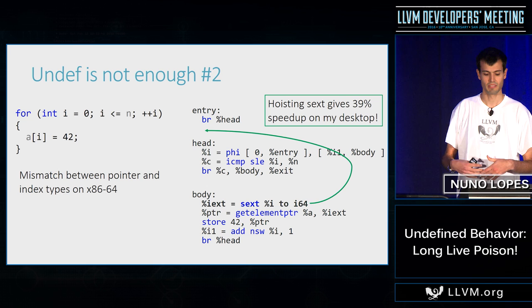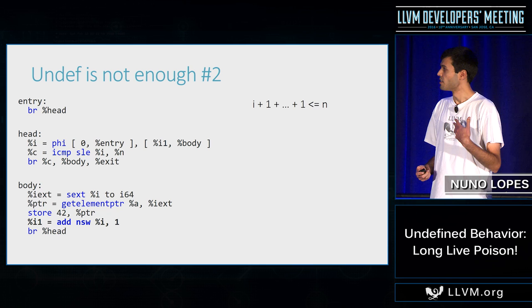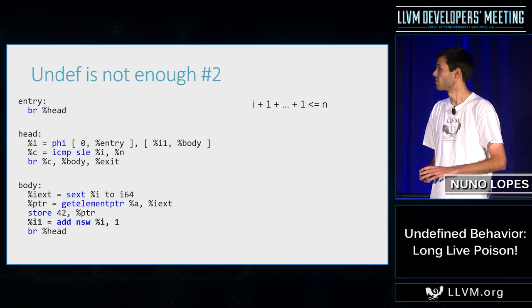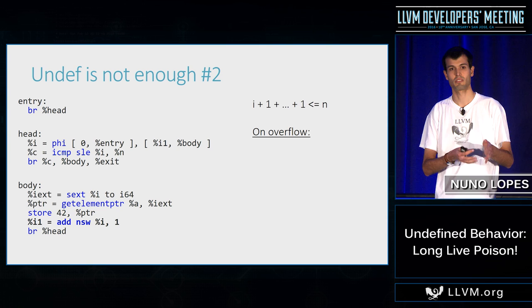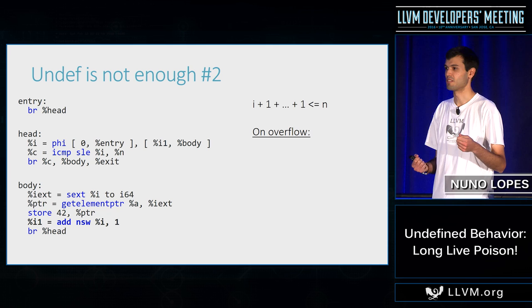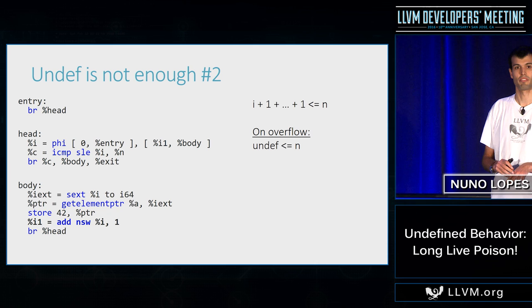In general, going from int to long changes the overflow behavior, but since overflow for signed integers is undefined behavior, we should be able to do this transformation. What we are comparing is whether i plus one plus one is less than or equal to n. If there's no overflow in this summation, it's correct to upgrade to long because if there's no overflow with a smaller type, there's no overflow with a bigger type. The only question is whether the optimization is correct on overflow. Let's consider that NSW returns undef if it overflows.